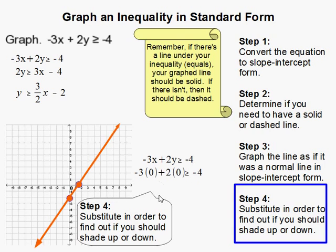So in this case, I picked a super easy one: 0, 0. So it's obviously on this side of the line. So since I substitute here, I got 0 is greater than or equal to negative 4, which is true.